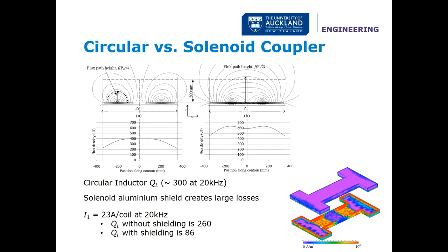The aluminium shield itself will have some loss in it. We can indicate how good the systems are by looking at the quality — reactance over resistance. A typical circular inductor at 20 kHz might have a quality around 300. The solenoidal system without the aluminium shield is close to that, but as soon as we add the shielding, eddy current loss drops the quality significantly — meaning too much loss. Another difference is that while the center fields from the circular are vertical, the center fields from a solenoid are horizontal, giving a different shape of fields at the center of the pads.